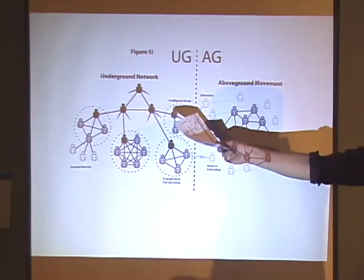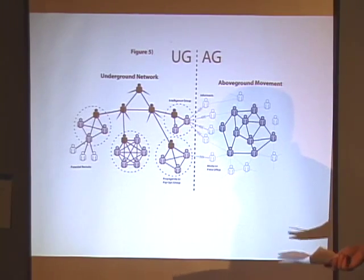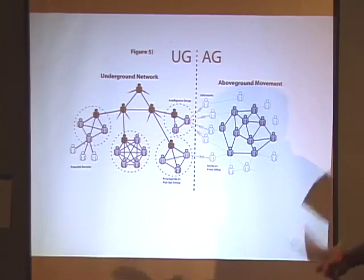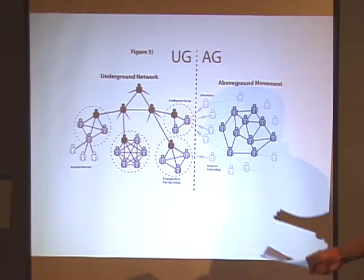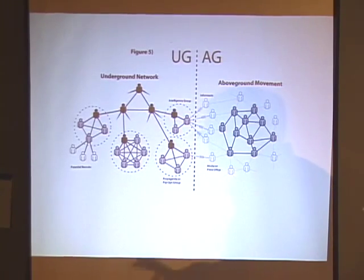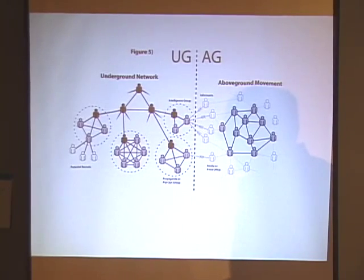Each of these cells has its own specific function. For example, here's an intelligence-gathering group, here's a propaganda group, and over there on the far side is a group that's recruiting people and recruiting new cells.